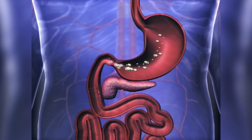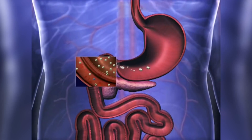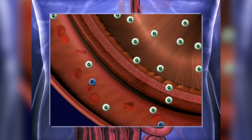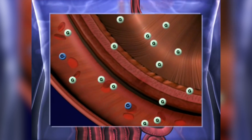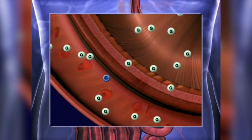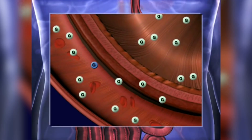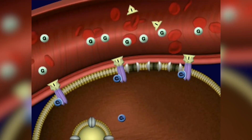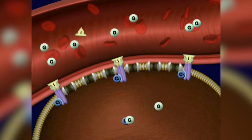Glucose is the main source of energy for our body — it can be converted to energy by almost any part of the body. When glucose enters our body, it is absorbed by our bowels and then travels with the blood. If our muscles or organs need energy, they can get it from digesting glucose.